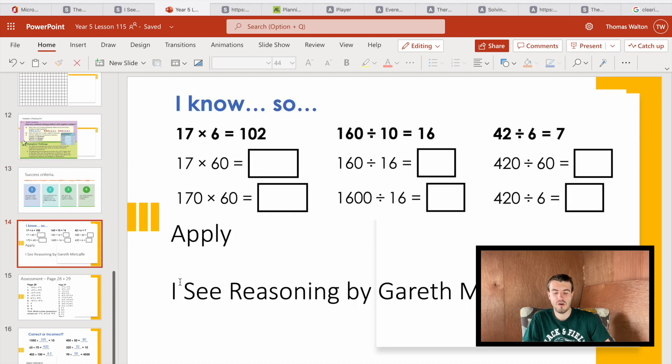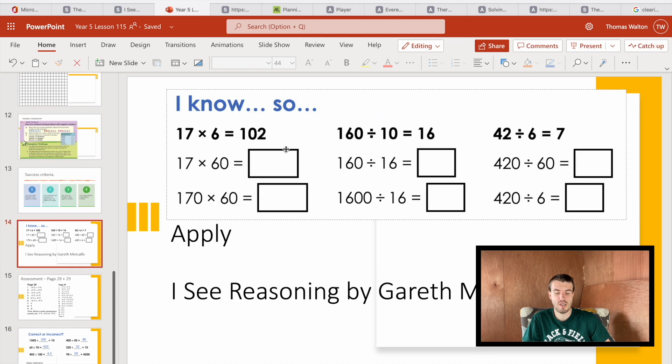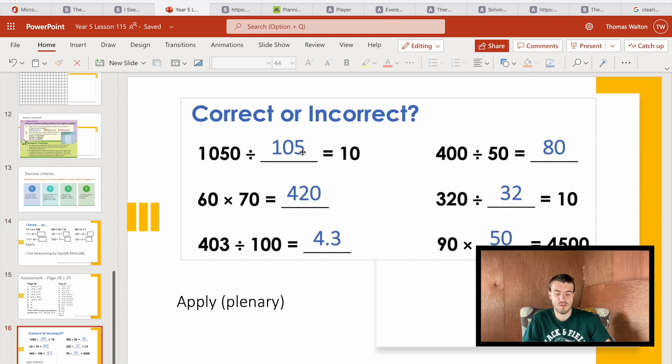And then at the end of the lesson we've got our reasoning questions. So we use I See Reasoning by a guy called Gareth Metcalf, and they just have questions like this where it helps them to check their work and encourages them to link things together. So 17 times 6 is 102. How do I then know 17 times 60? What about 170 times 60? How do I know the difference between all of those? And same for these, it's about helping children to check their work. If they can check it and spot the mistakes that have been made, they'll prove they know what they're talking about.